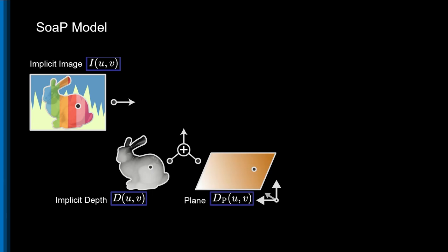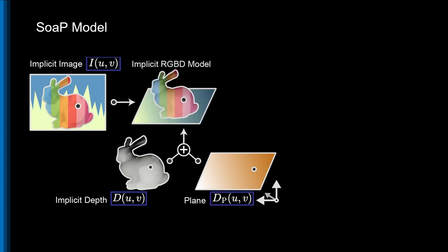This represents parts of the scene that are too far away or lack sufficient texture to contain meaningful parallax information, and which would otherwise produce noisy depth estimates. With these three components combined, we now have our implicit RGBD model.